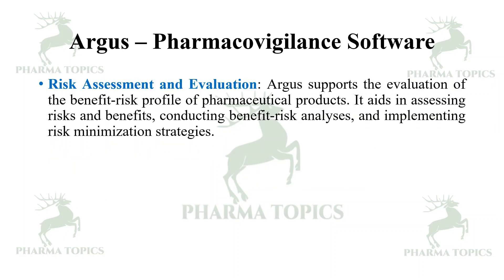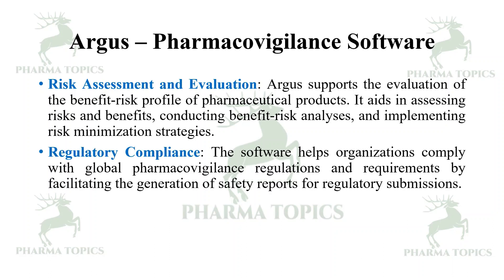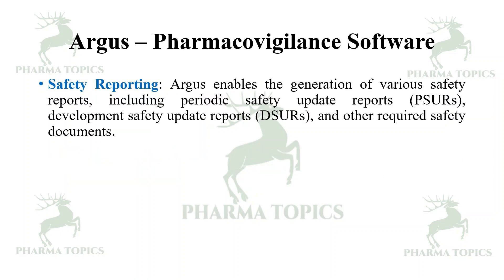Risk assessment and evaluation: Argus supports the evaluation of the benefit-risk profile of pharmaceutical products. It aids in assessing risks and benefits, conducting benefit-risk analysis, and implementing risk minimization strategies. Regulatory compliance: this software helps organizations comply with global pharmacovigilance regulations by facilitating the generation of safety reports for regulatory submissions.